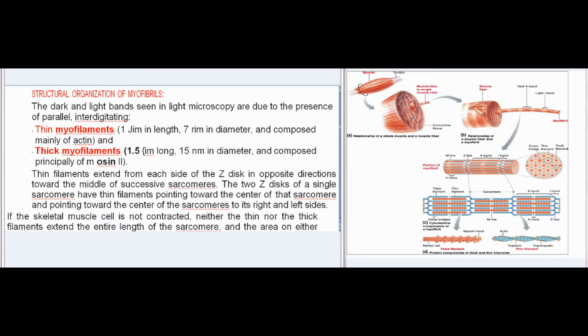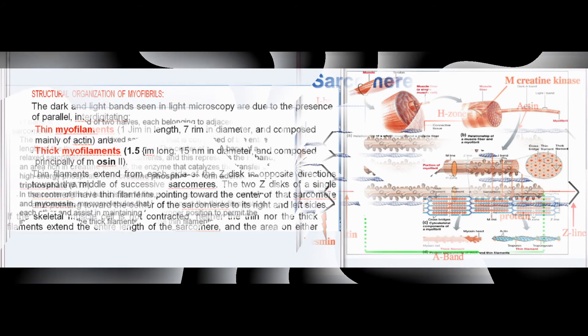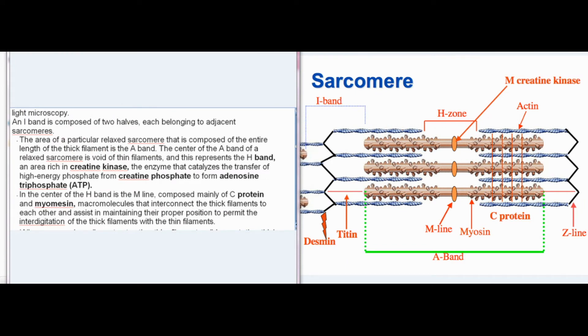Thin filaments extend from each side of the Z-disc in opposite directions toward the middle of successive sarcomeres. If the skeletal muscle cell is not contracted, neither the thin nor the thick filaments extend the entire length of the sarcomere, and the area on either side of a particular Z-disc, composed only of thin filaments, is the I-band of light microscopy. An I-band is composed of two halves, each belonging to adjacent sarcomeres. The area of a particular relaxed sarcomere composed of the entire length of the thick filament is the A-band.